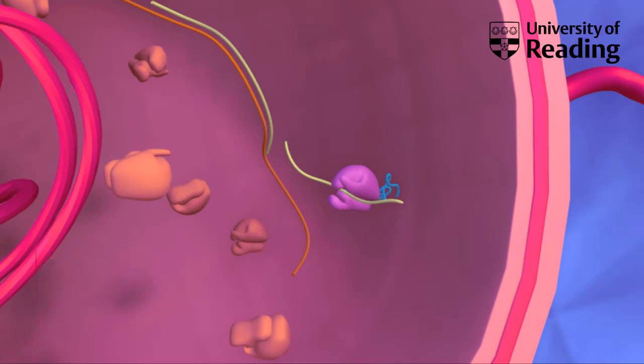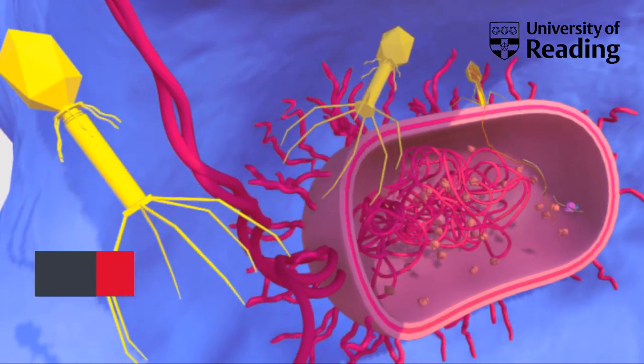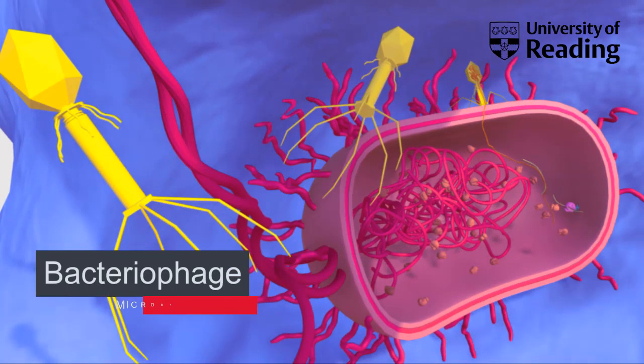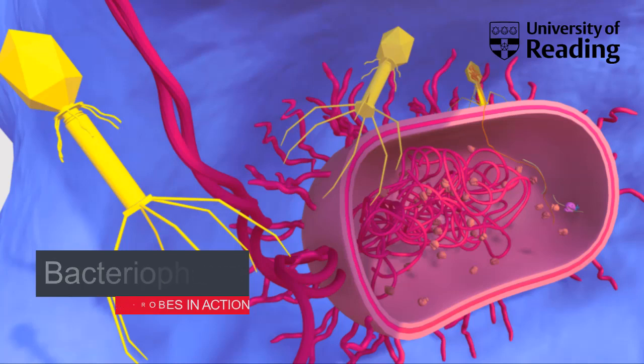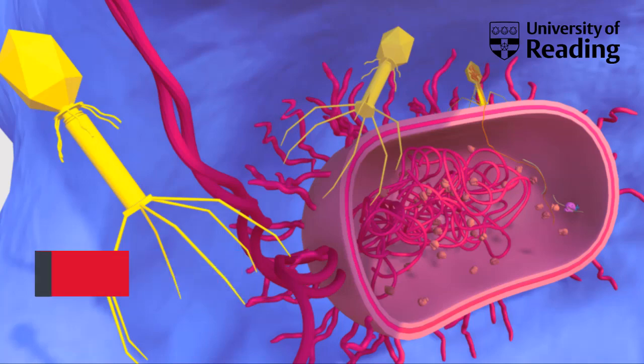This bacterial cell is being infected by a bacteriophage. It has attached to the outside of the cell and is injecting its DNA genome into the bacterial cytoplasm. The virus will then hijack the bacterial machinery to make lots of copies of the viral genome and viral proteins, and these components will self-assemble into hundreds of new viruses that will burst out of the cell and destroy it.